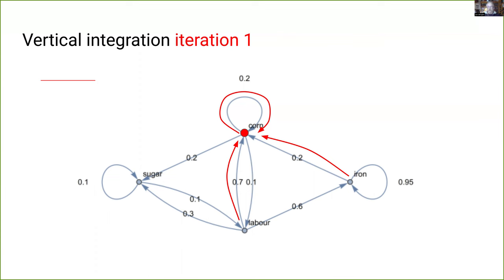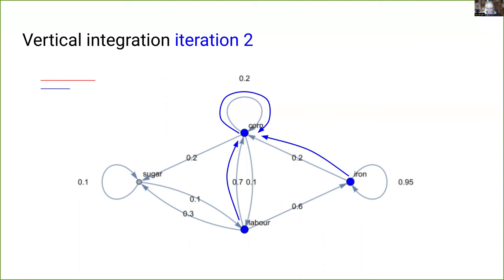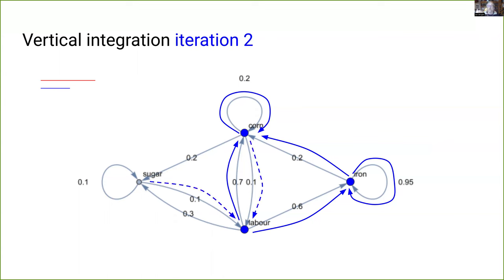Imagine one unit of corn is produced as output in the corn sector — that's what the red dot represents. To produce one unit of corn uses some input corn (seed corn), a smaller amount, shown by the red line. We also need some iron and some labor inputs. But we can't stop there, because we haven't counted all the labor yet — some indirect labor is supplied to produce the iron that was used up. The blue dots represent inputs from the first iteration that we now need to trace further back. This gets complicated quickly, which is why vertical integration is normally expressed in linear algebra.